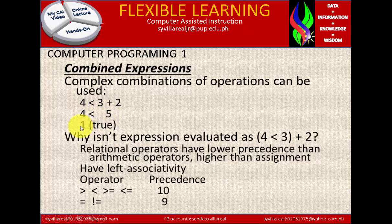Next, 4 is less than 5, then that is true. Why is the expression evaluated as 4 less than 3 plus 2? Now relational operators have lower precedence than arithmetic operators, higher than the assignment, and have left associativity.